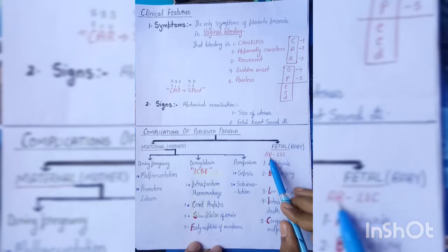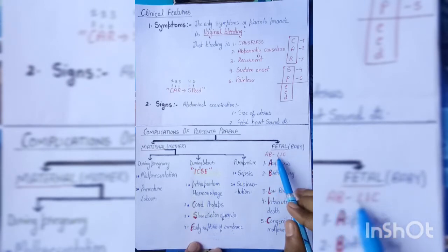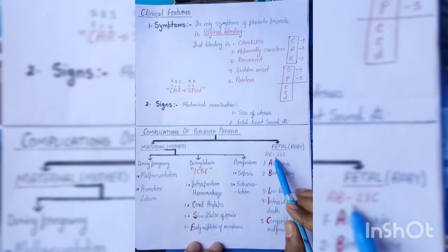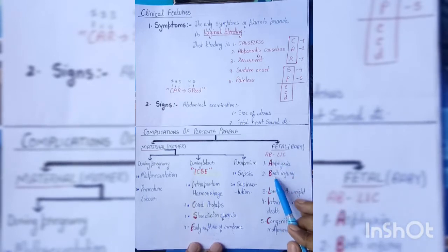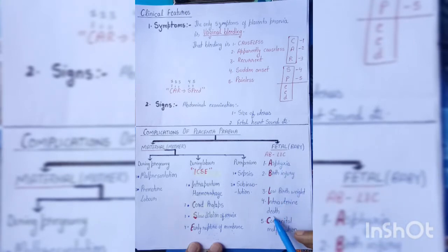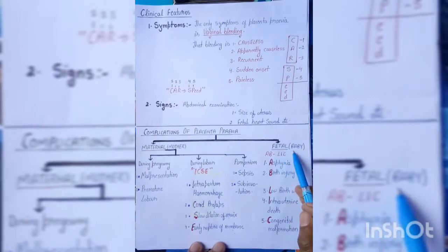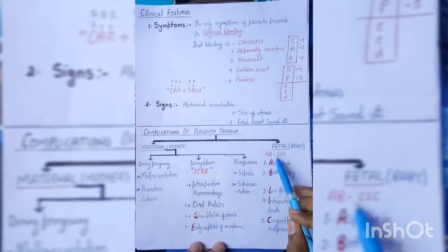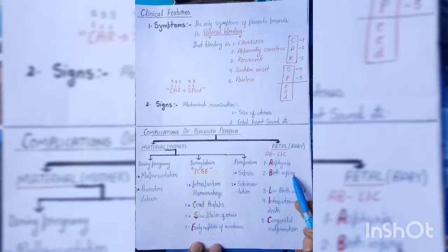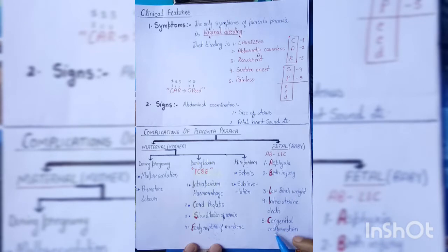Fetal complications can be remembered with the mnemonic 'LIC' — like getting life insurance for the baby. A stands for asphyxia, B for birth injury, L for low birth weight, I for intrauterine death, and C for congenital malformation. So fetal complications are: asphyxia, birth injury, low birth weight, intrauterine death, and congenital malformation.